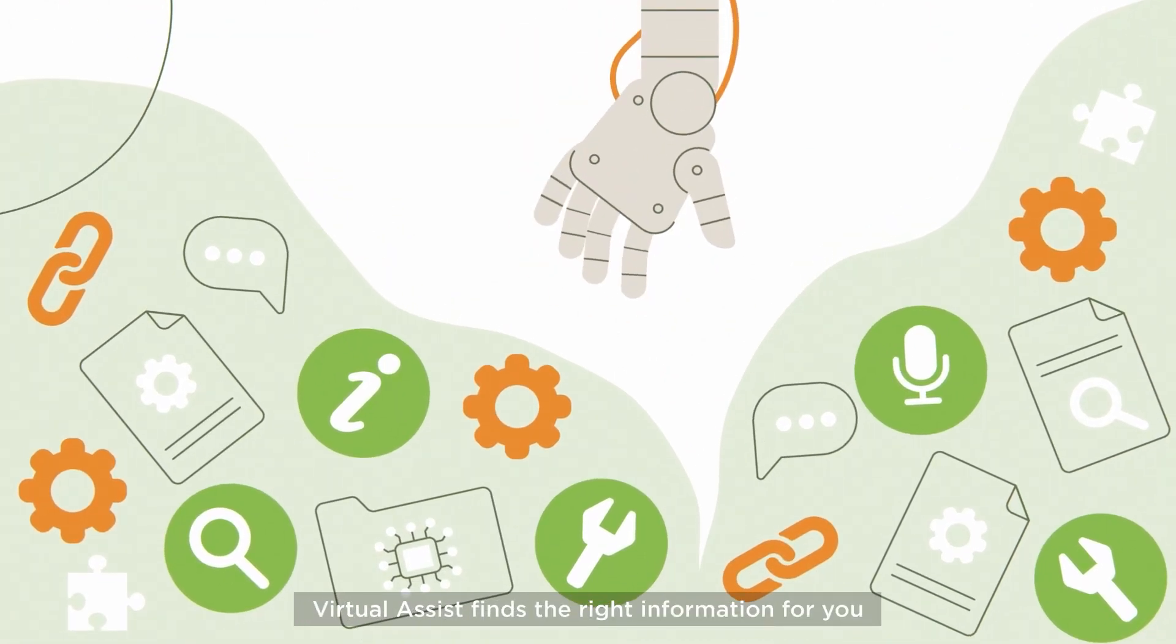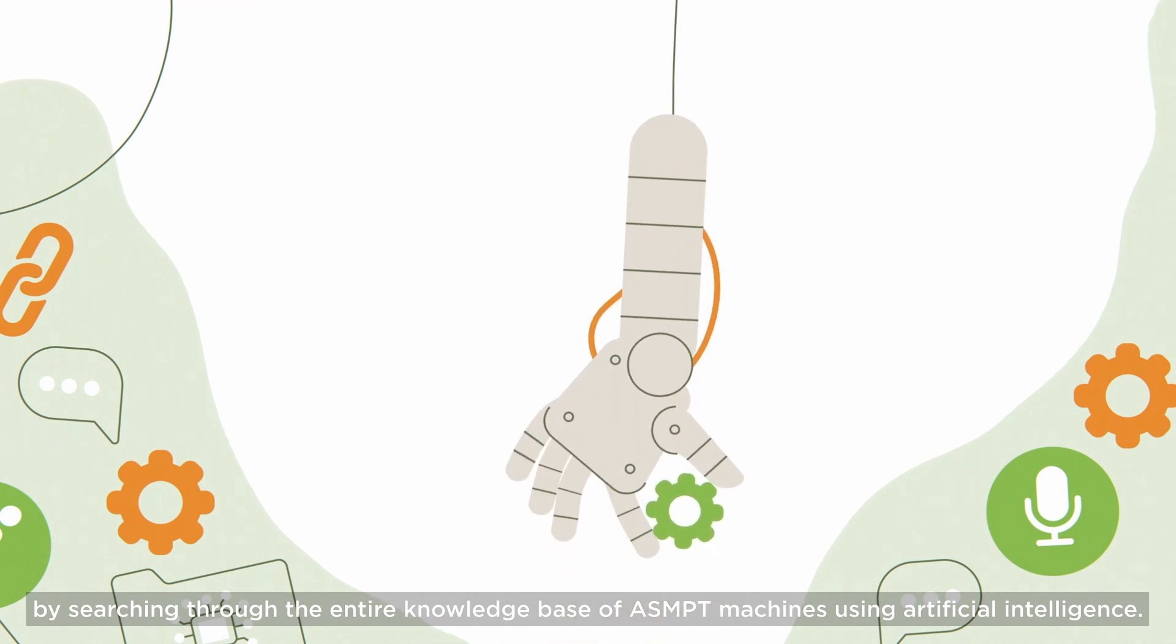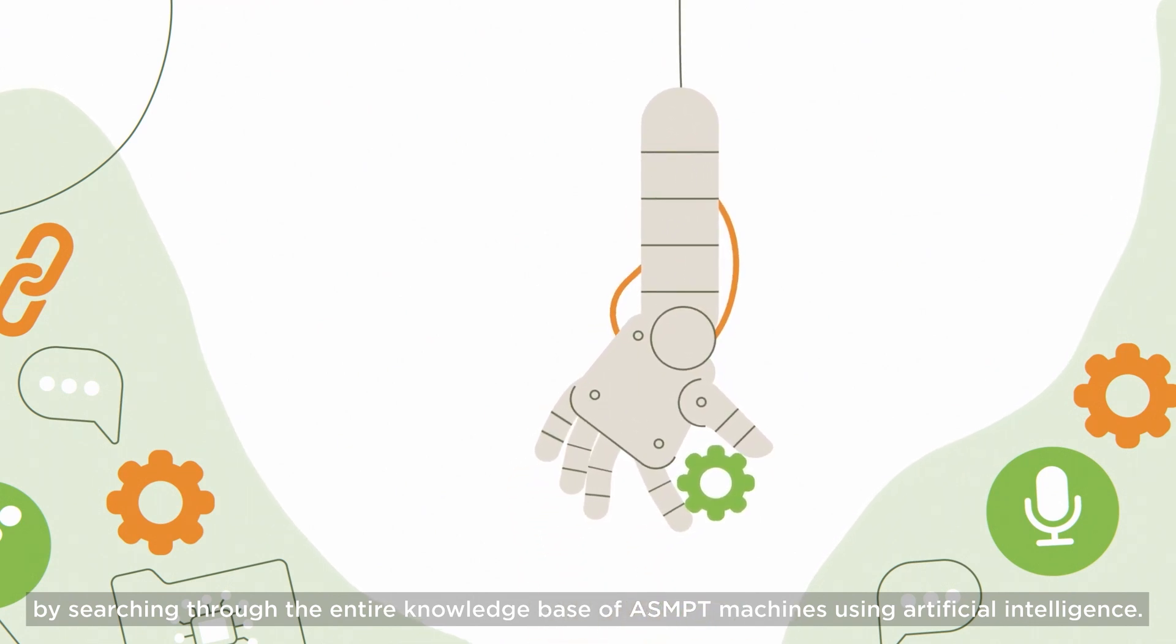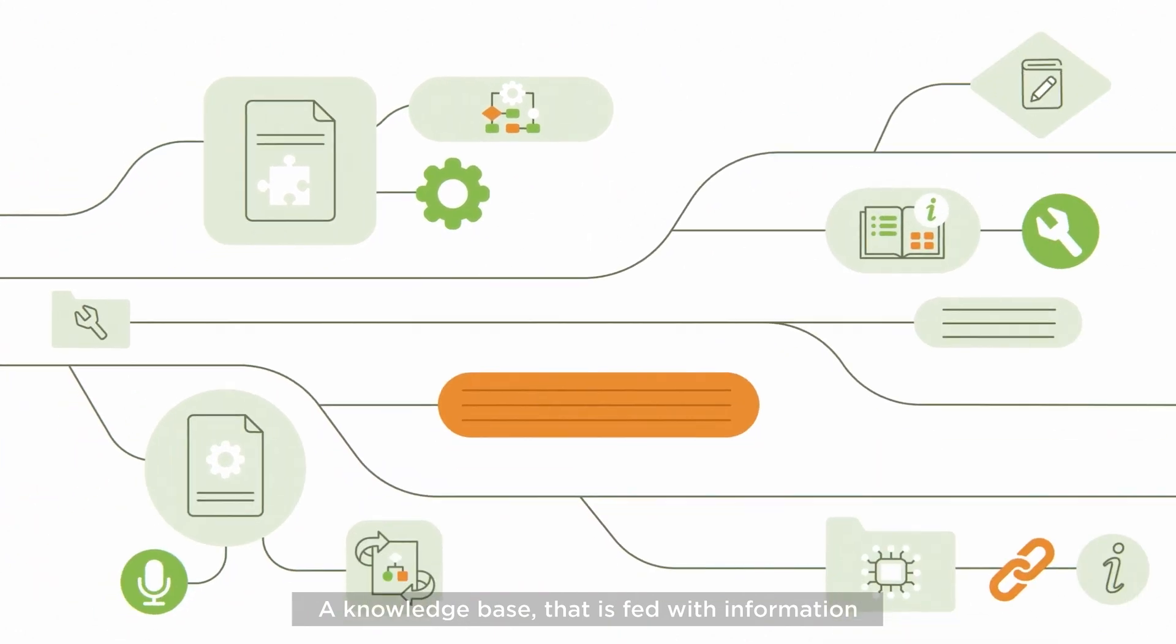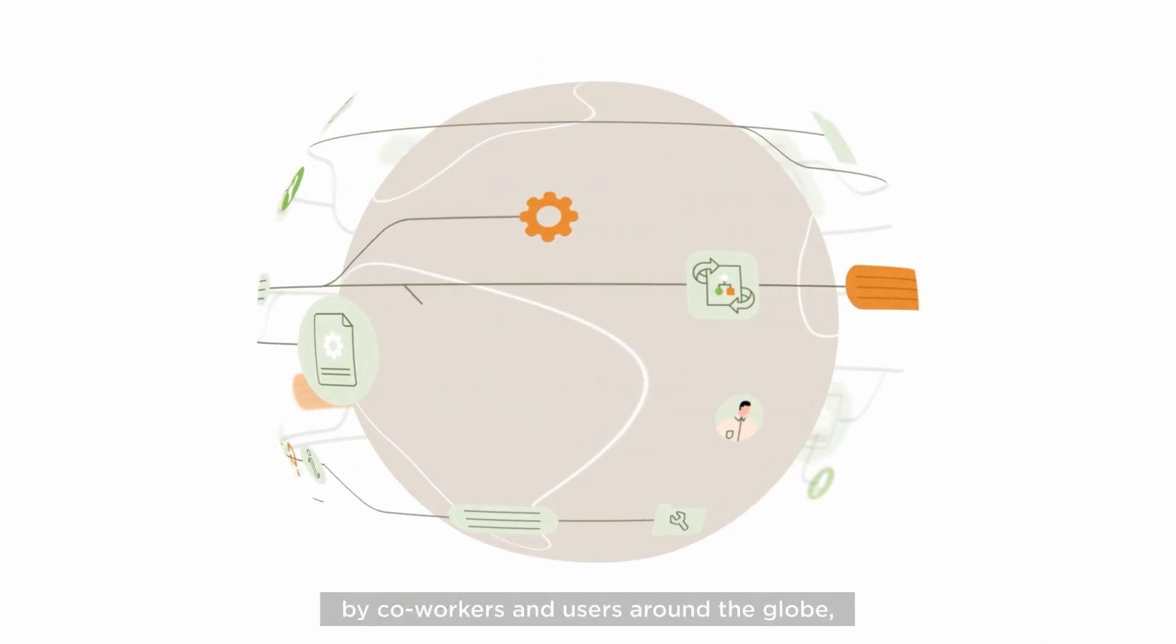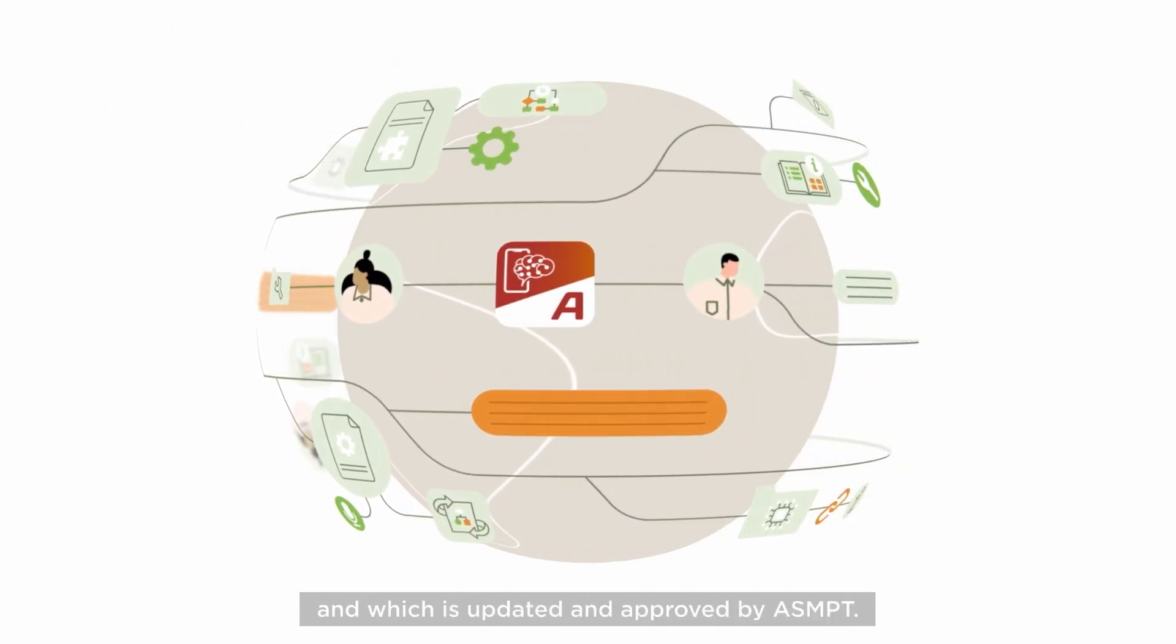Virtual Assist finds the right information for you by searching through the entire knowledge base of ASMPT machines using artificial intelligence. A knowledge base that is fed with information by co-workers and users around the globe and which is updated and approved by ASMPT.